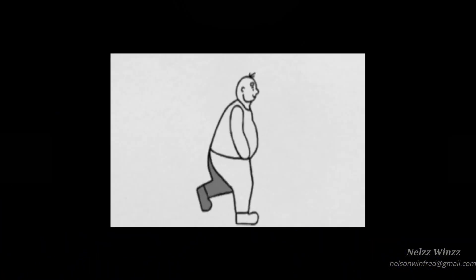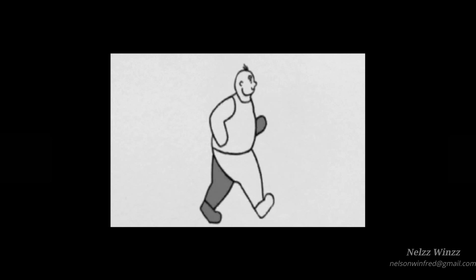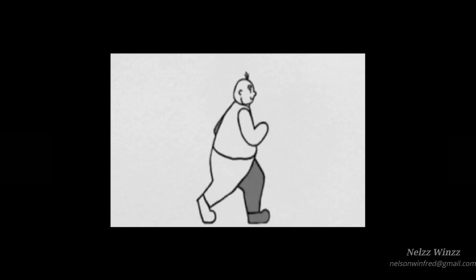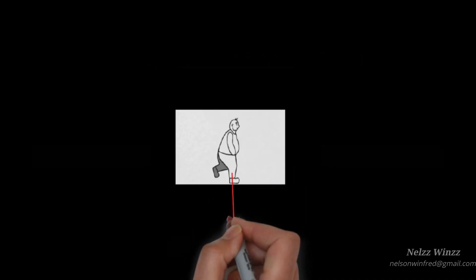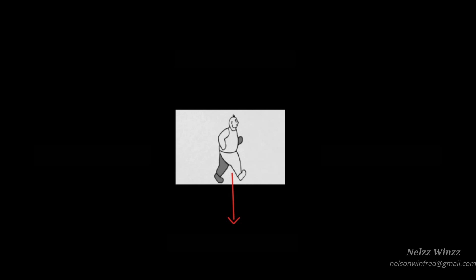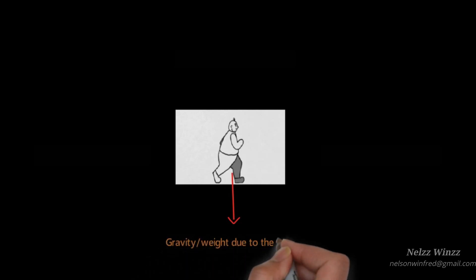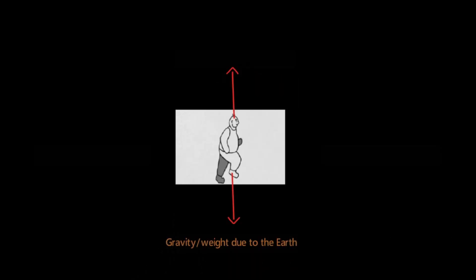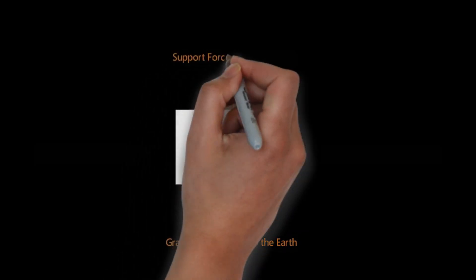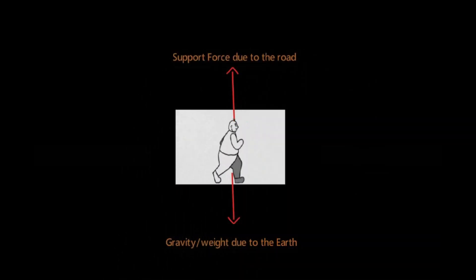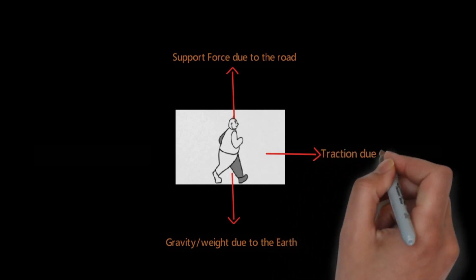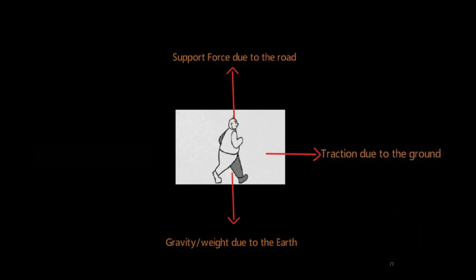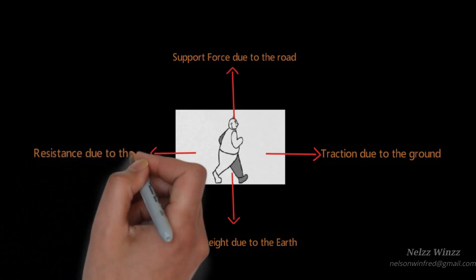Now, this man is walking as usual. His weight is acting downward because of gravity, and the ground will create an equal and opposite supportive force upward. The traction between legs and surface will help to move forward, and air resistance acts opposite to the oncoming flow velocity.